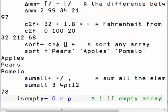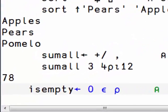Here we want to know if an array is empty. We simply ask if a 0 is a member of the shape.